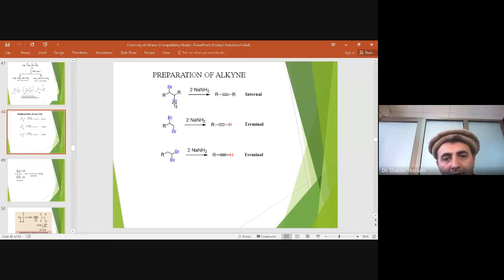One is the terminal one in which bromine is at a terminal position, and one is bromine present in internal positions. Sodium amide acts as a base. It abstracts protons from the alpha beta-hydrogen adjacent to the bromine.